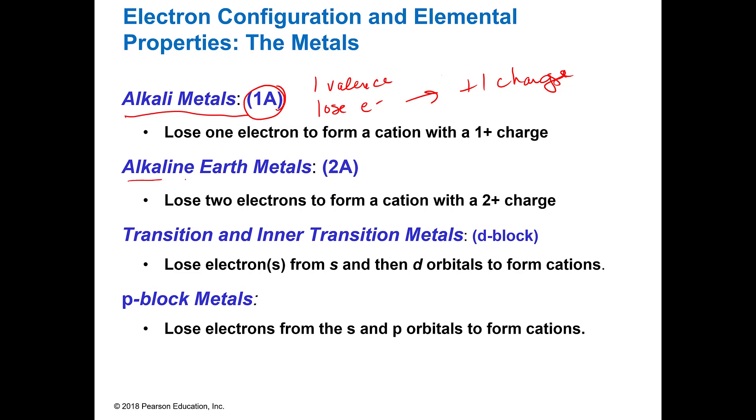Your alkaline earth metals is in group 2A, so it sounds almost like alkali metals except it's alkaline earth metals, and those will form a plus two charge and they have two valence electrons.